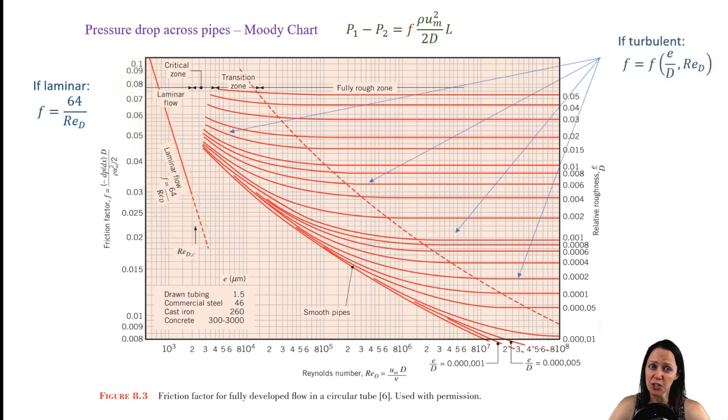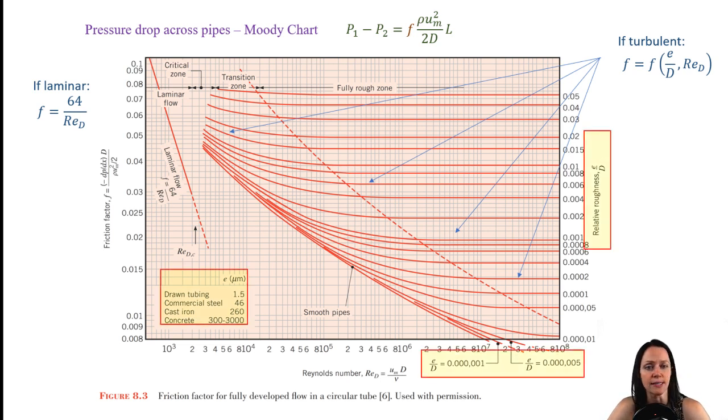If the flow is turbulent, the relationship gets a little more tricky. The friction factor will be a function of the Reynolds number as well as the surface roughness. So that relative roughness is the roughness divided by the diameter. And you can see some representative values for the roughness for several materials listed at the bottom of the chart.